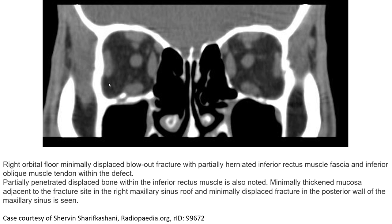There is minimal mucosal thickening adjacent to the fracture site in the right maxillary sinus floor, and a minimally displaced fracture in the posterior wall of the maxillary sinus is also seen.